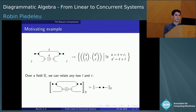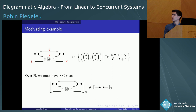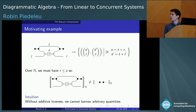The eureka moment for us was when we realized that over the semi-ring of the naturals — non-negative integers — r must be smaller than s, so the previous equality does not hold anymore. This simple observation boils down to the fact that without additive inverses, we cannot borrow arbitrary quantities. That's why we gave it the name resource interpretation. And in fact, over ℕ, this diagram behaves exactly like the place of a Petri net.